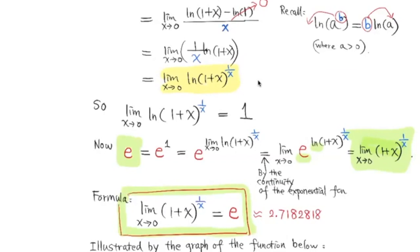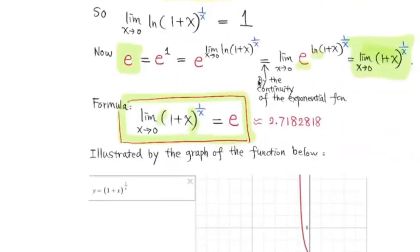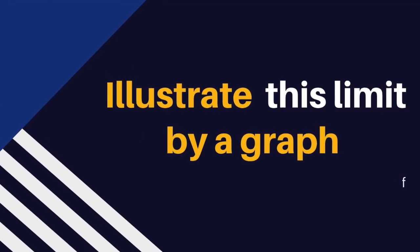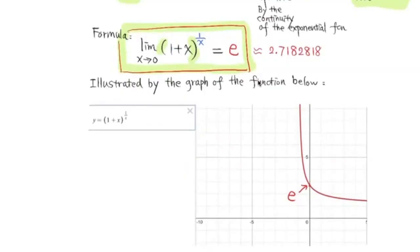We know that e is an irrational number like pi. Now let's try to see it from the graph. This is a graph for 1 plus x to the 1 over x power. As x approaches 0 from both sides along the curve, the function value is getting closer and closer to e.